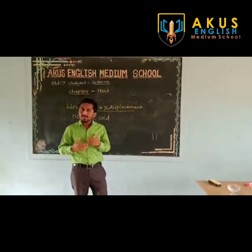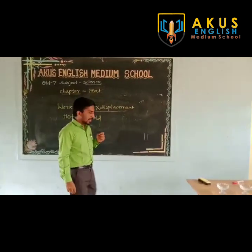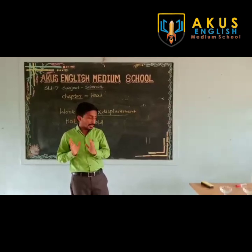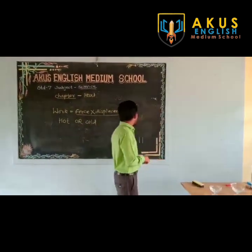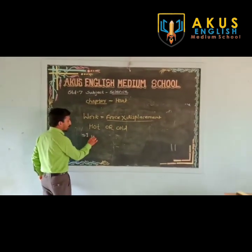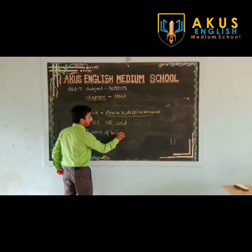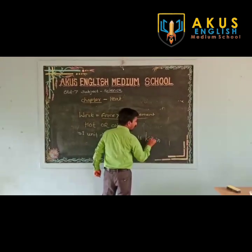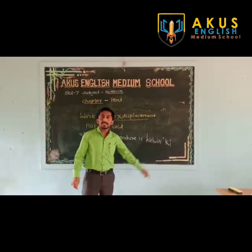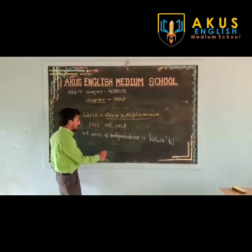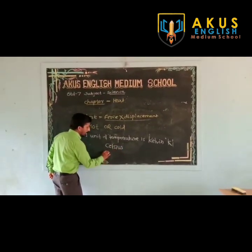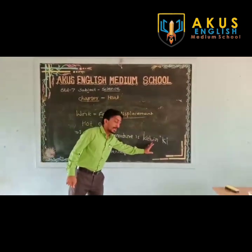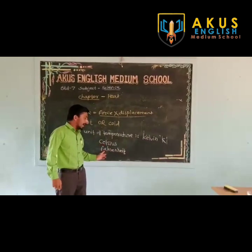Then how are you going to determine it? You have to measure the temperature. Temperature is the measure of degree of hotness or coldness of a substance. The SI unit of temperature is Kelvin, denoted by K. There are two other scales to measure temperature: degree Celsius scale and degree Fahrenheit scale.